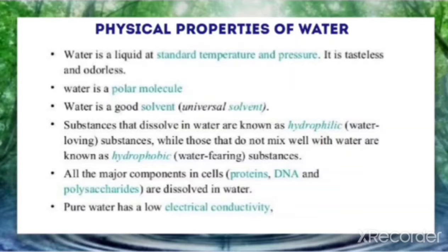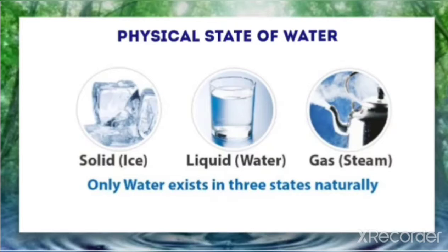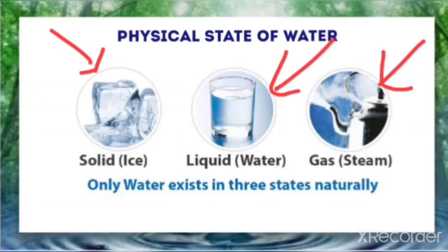Water has a bent molecular structure. It can exist naturally in three states: in the solid state it is called ice, in the liquid state it is water, and in the gaseous state it is called steam. This ability to exist in three states — solid, liquid, and gas — is one of water's most important properties, and we are familiar with all three in our day-to-day life.